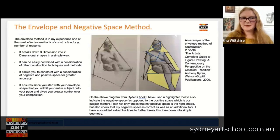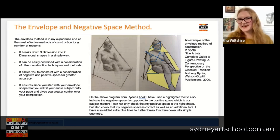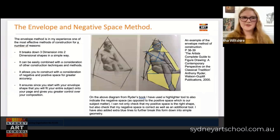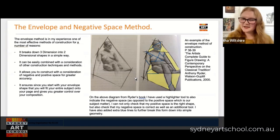So let's start by talking about the envelope technique, remembering that you can have a neat or messy approach to any of these techniques, and remembering also that sometimes we can take bits and pieces from one technique and splice them together with another. The envelope technique is in my experience one of the most effective methods for construction, for a number of reasons. The first reason is because it breaks down three dimension into two-dimensional shapes in a really simple way. What the envelope method entails, as Anthony Rider demonstrates in his book The Artist's Complete Guide to Figure Drawing, is using diagonal and straight lines to encase whatever you're drawing — it could be a figure, a teapot, it doesn't matter — in this envelope shape.